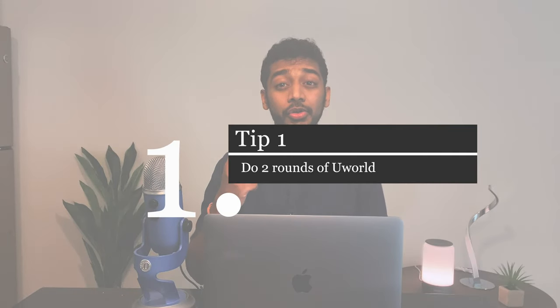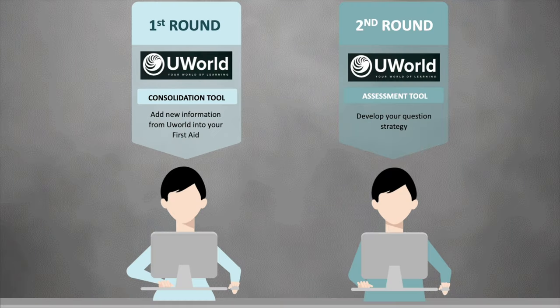The first thing you should remember: every IMG should do at least two rounds of UWorld. Your first round is a learning tool, whereas your second round is an assessment tool. You should use UWorld as a question bank where you learn how to apply clinical knowledge, but you should also use it as a textbook. UWorld contains a lot of information not present in other resources, so consolidate it all into one place — in this case, that's First Aid.